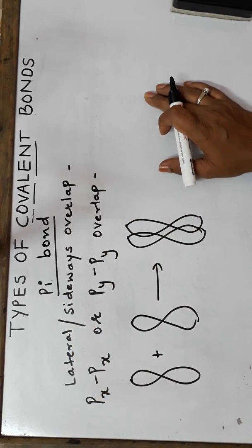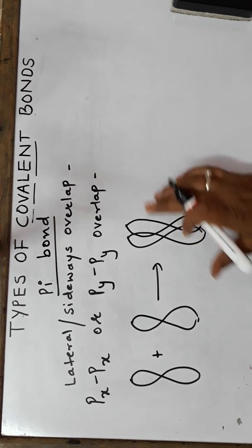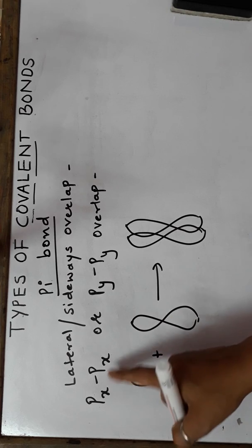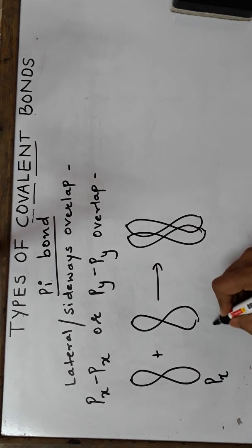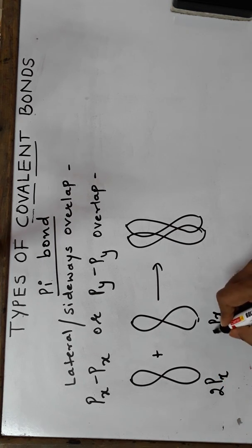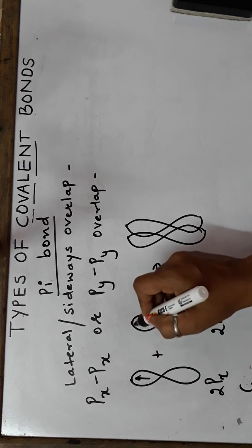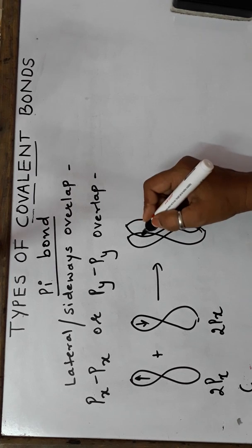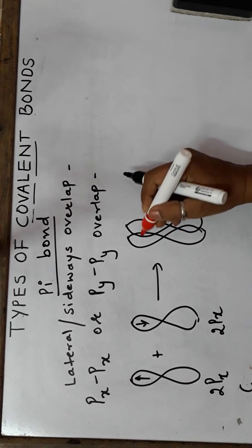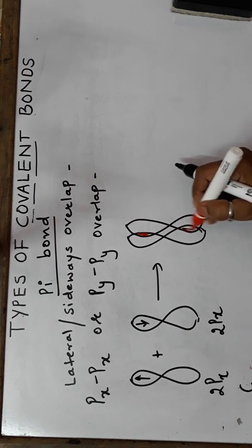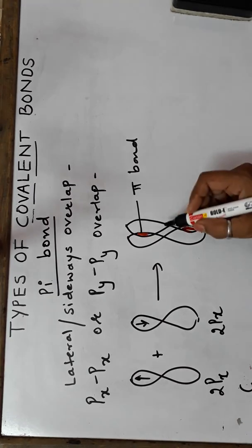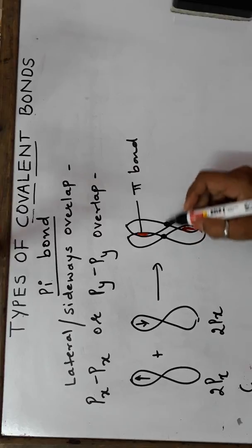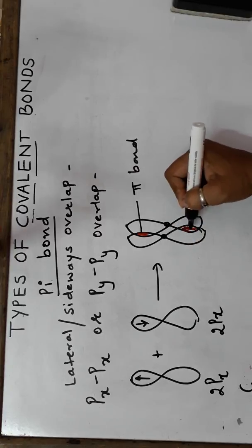The pi bond is formed by lateral overlap or sideways overlap — it is also a kind of covalent bond because it is formed by sharing of electrons. Here we take the px-px orbitals overlapping with each other, or py-py orbitals overlapping with each other. For example, if carbon is making a double bond, both orbitals have one unpaired electron each, and there is a lateral overlap. The zone of electron density is above and below the internuclear axis — this is the pi bond.